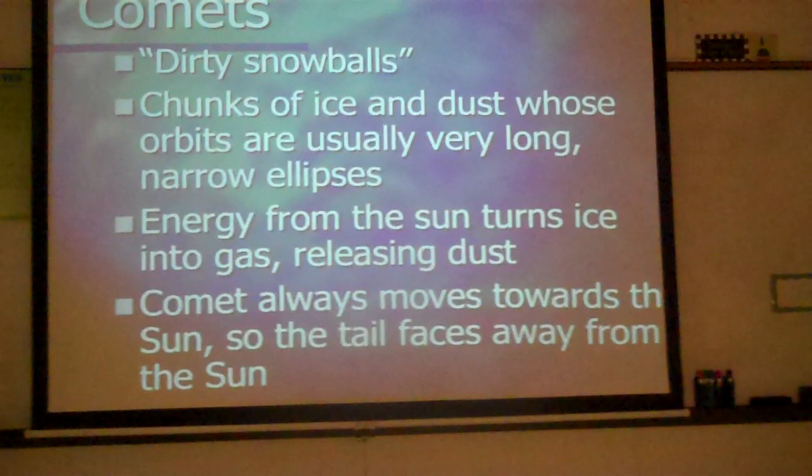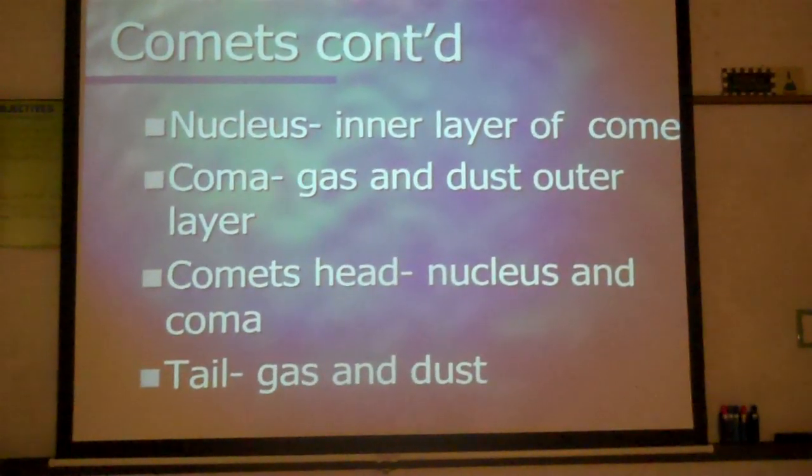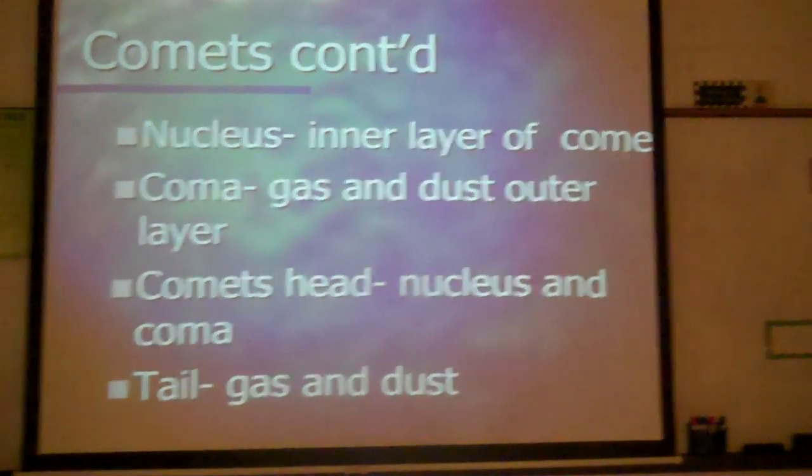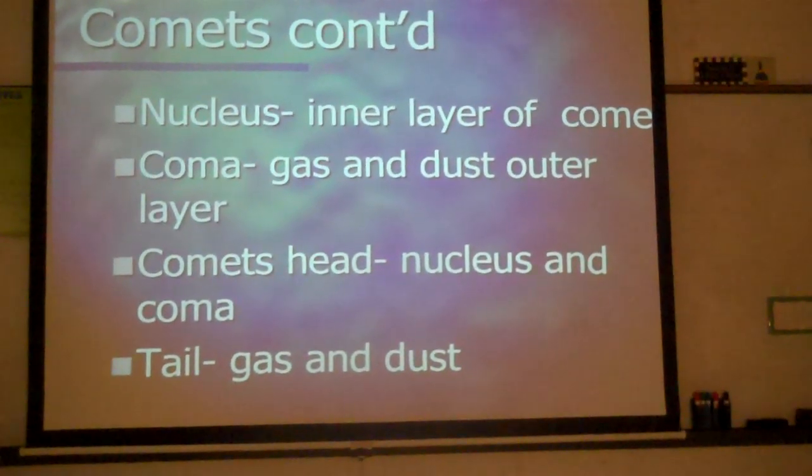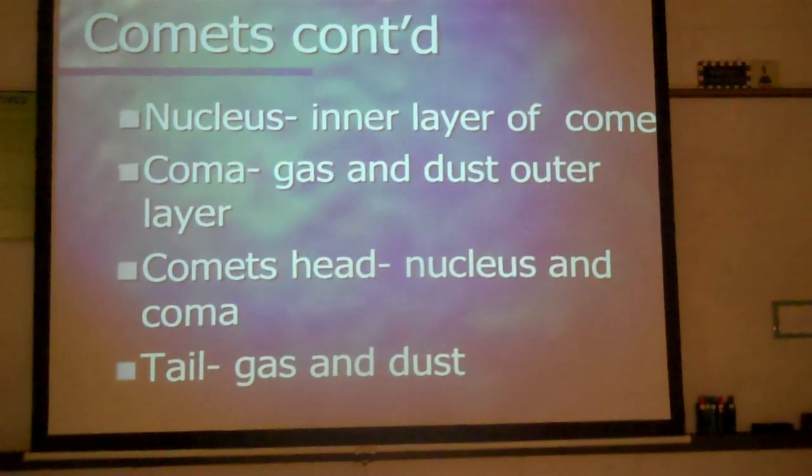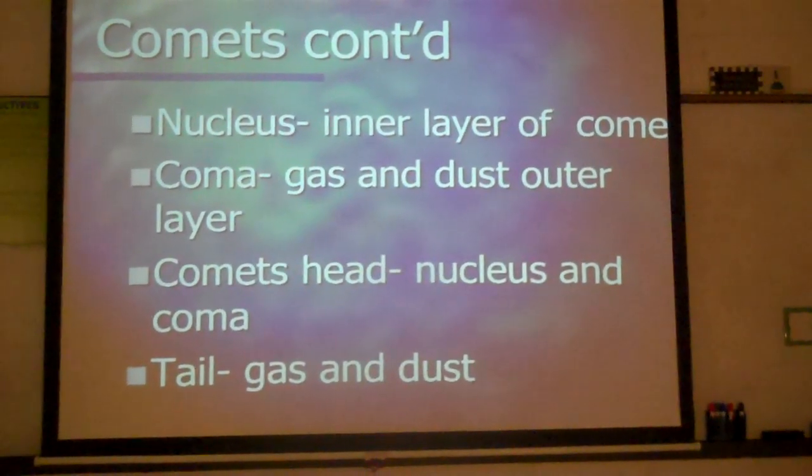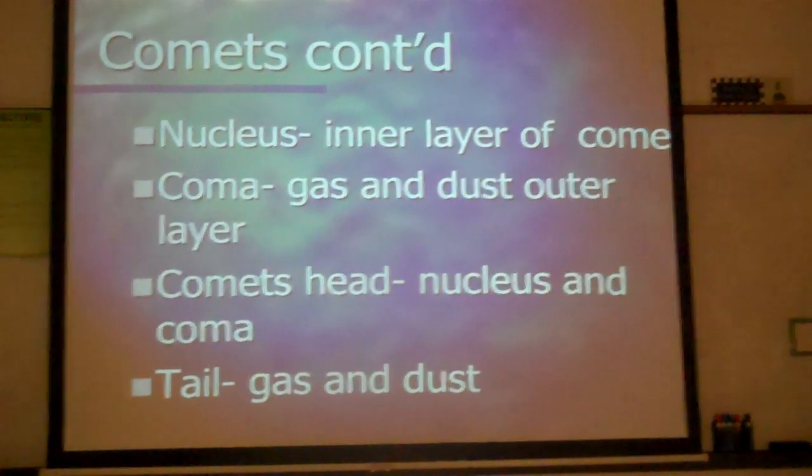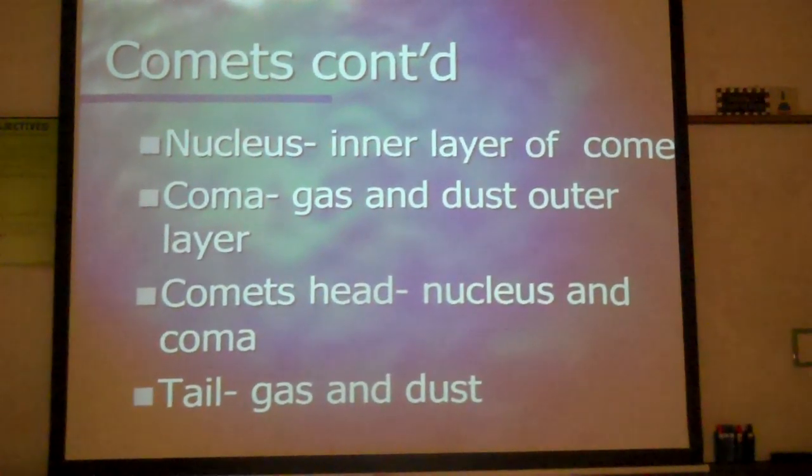There are four parts to the comet. We have the nucleus, which is the inner layer of the comet. We have the coma, which is the dust and gas outer layer. We have the comet's head, which is the nucleus and the coma.